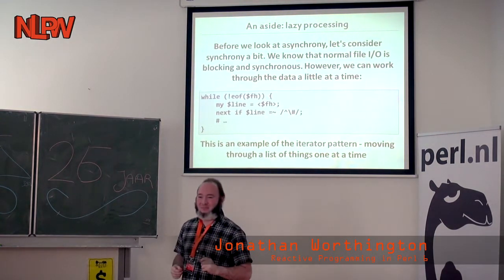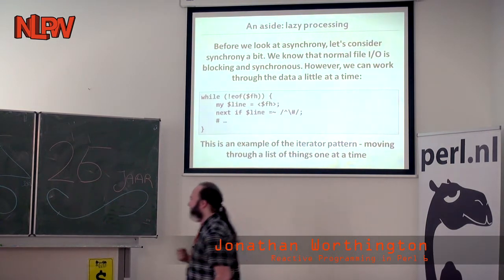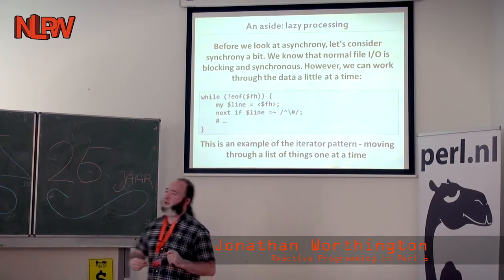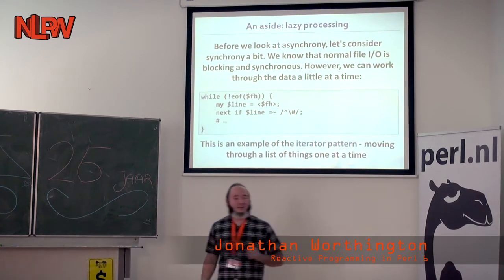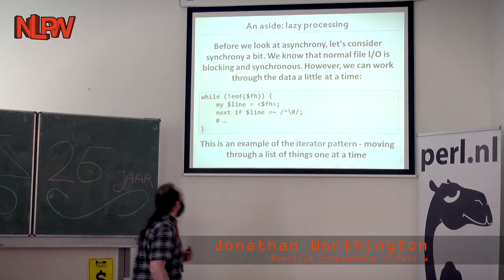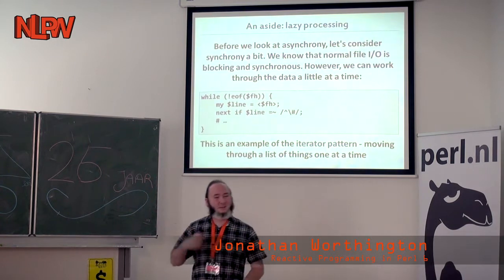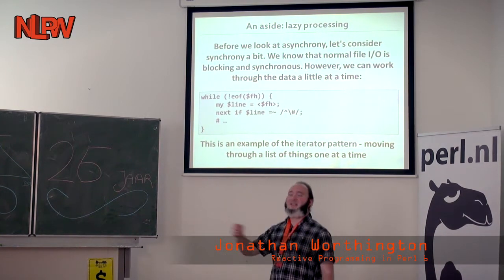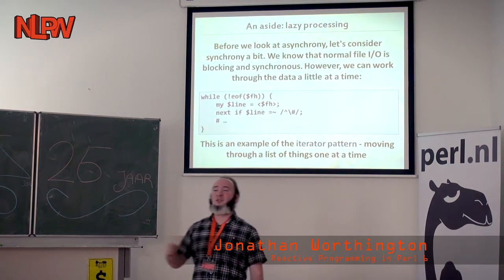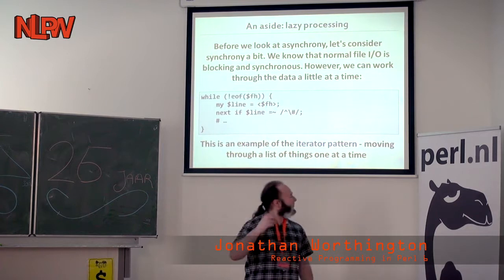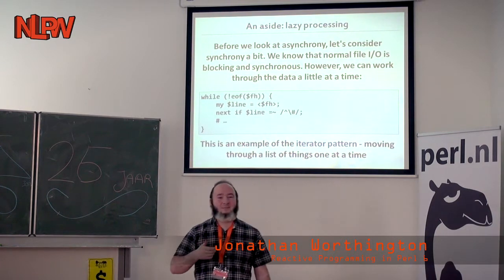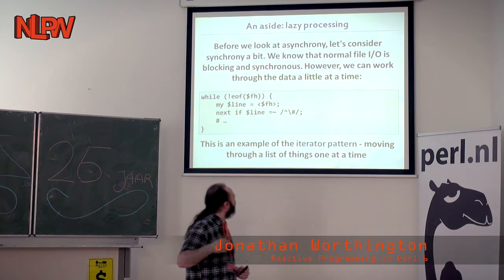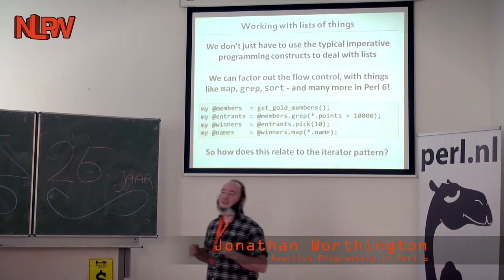Before we try and take this on, let's talk about something more familiar and how we deal with the problems it gives us. This is the one bit of Perl 5 in my talk - a while loop reading a file. The thing to note is that it goes through the file line by line. At some point we'll block, maybe waiting for the disk to slowly give us more data - much slower than the CPU. The real pattern at the heart of this is what we call the iterator pattern: we have data and we're working through it step by step, line by line.